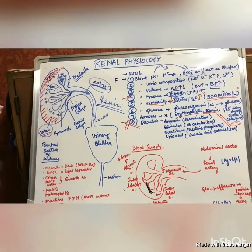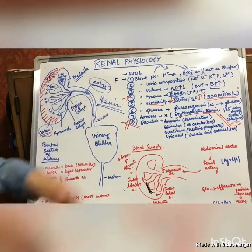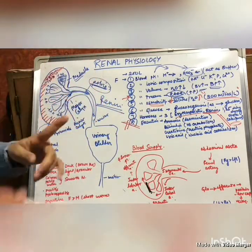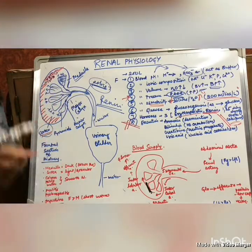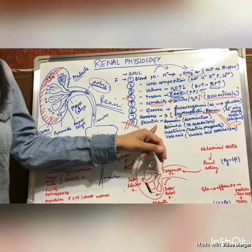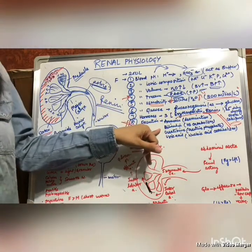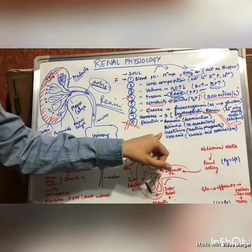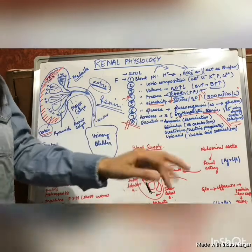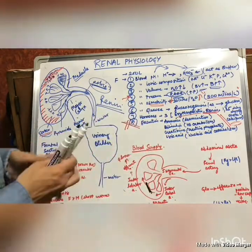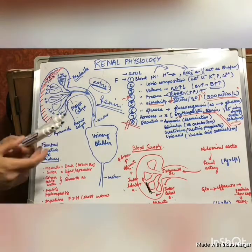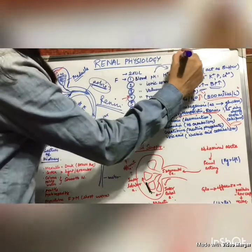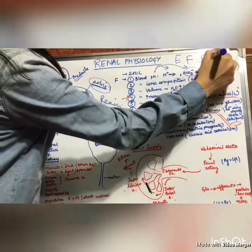The kidney excretes, reabsorbs, and filters blood products. What it excretes includes: ammonia, bilirubin, creatinine, and uric acid. Ammonia is formed by deamination of amines; bilirubin is formed by catabolism of hemoglobin; creatinine is a product of creatine phosphate degradation; and uric acid is a product of nucleic acid catabolism. In brief, kidney functions include excretion, filtration, and reabsorption.